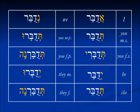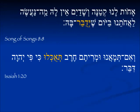So we have: yidubar, tedubar, tedubri, and so on. I did find one example of this verb in Tanakh — it's in Song of Songs 8:8, talking about the young sister. It says, 'What will we do for our sister, b'yom sheyidubar ba' — on the day that she is spoken for? In other words, somebody has asked for her; she is not doing it herself. So that's a third person masculine singular.